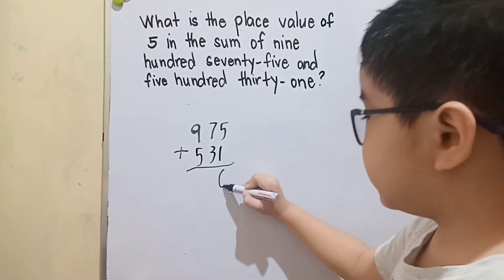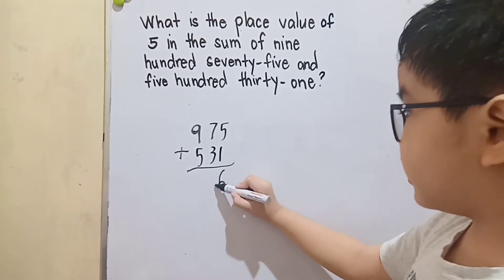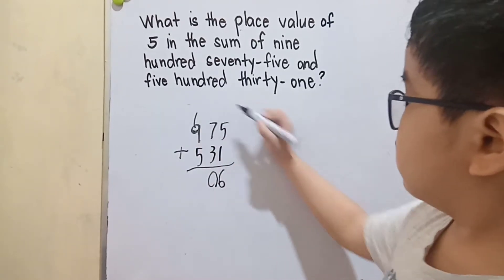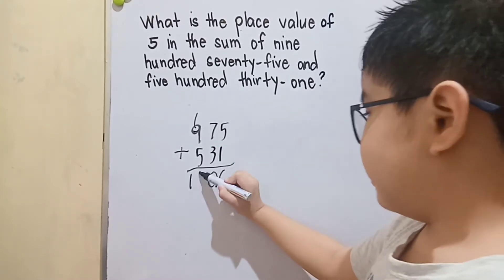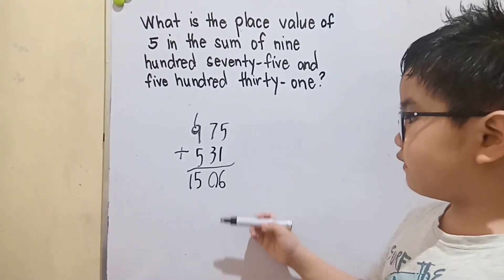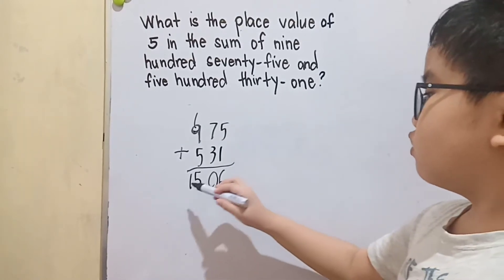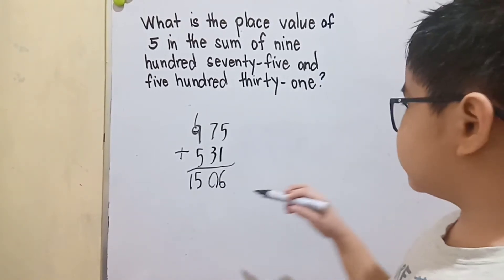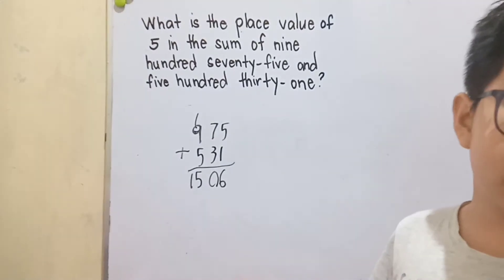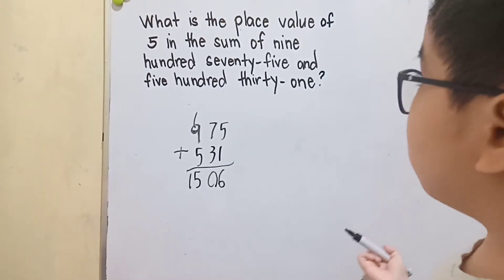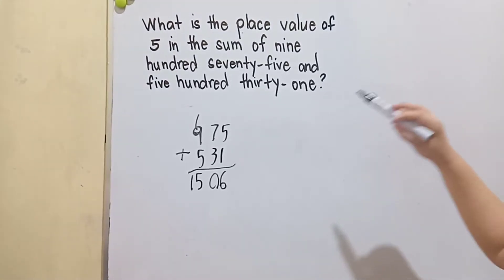We have 5 plus 1 is 6, 7 plus 3 is 10, 9 plus 5 is 14, plus 1 is 15. So we have the sum: 1,506. But in this problem we are asked for the place value of 5.